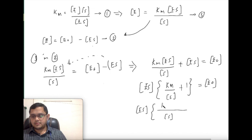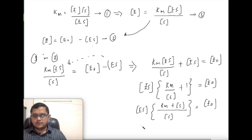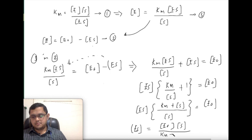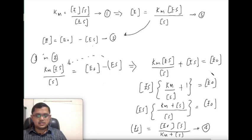From this we can calculate [ES]: [ES] equals E0·[S] divided by (Km + [S]). This is equation 4. The square brackets denote concentration, while Km is a constant so it does not carry square brackets.